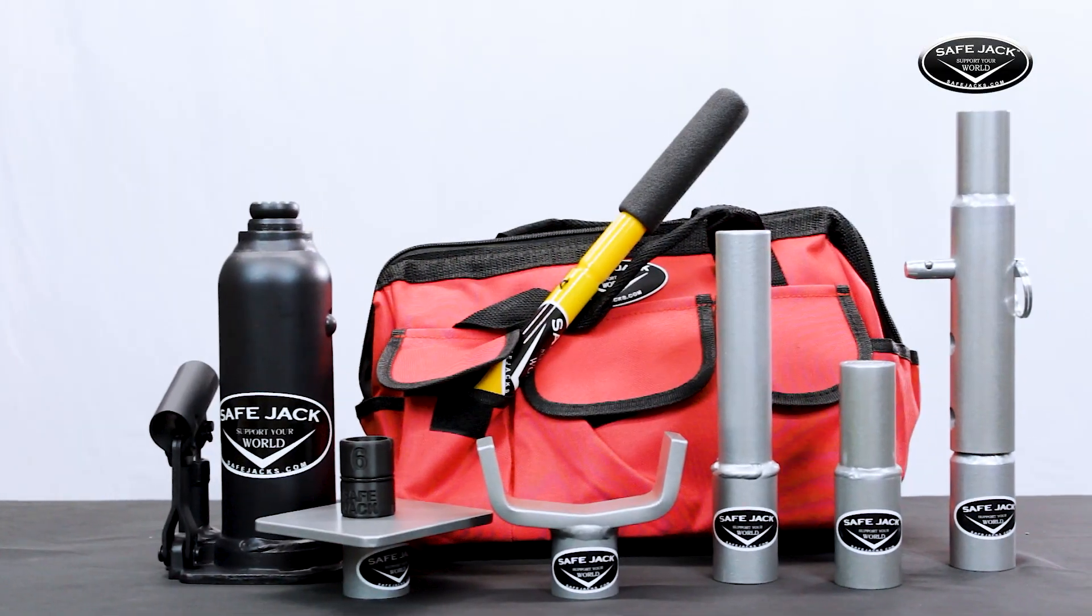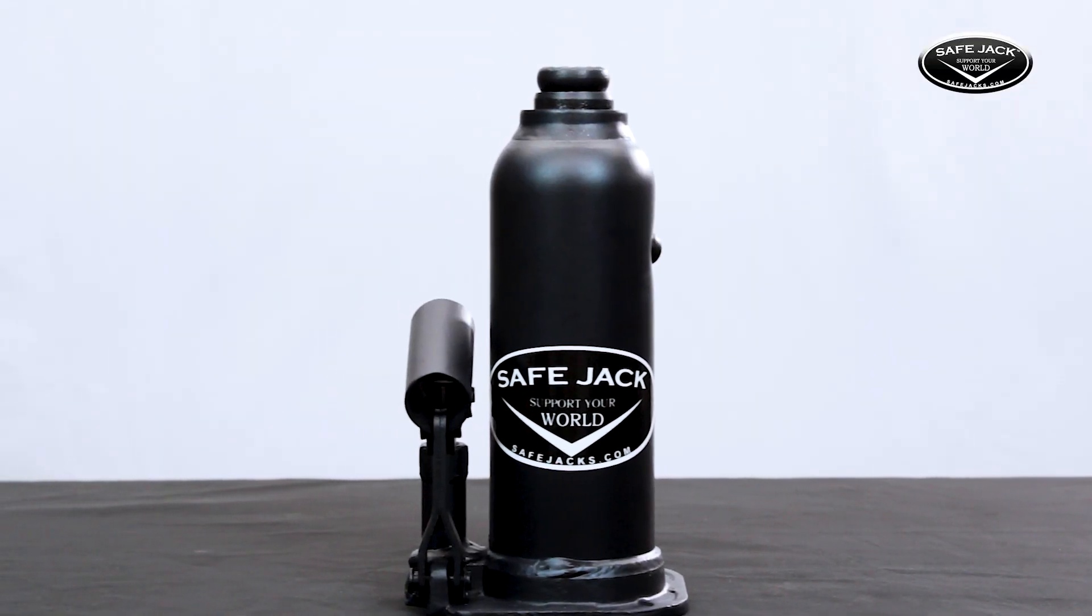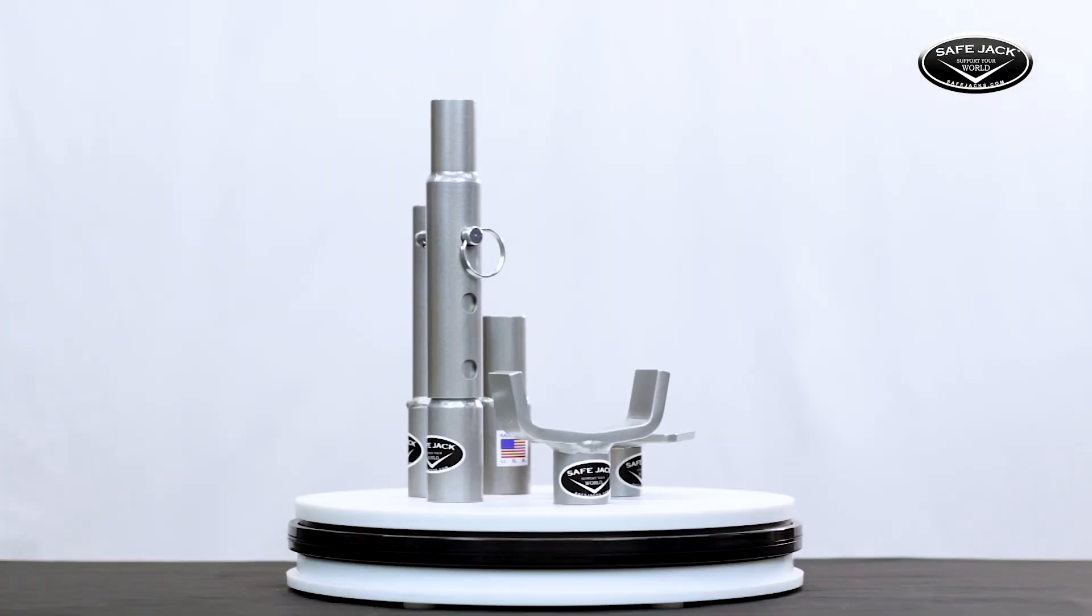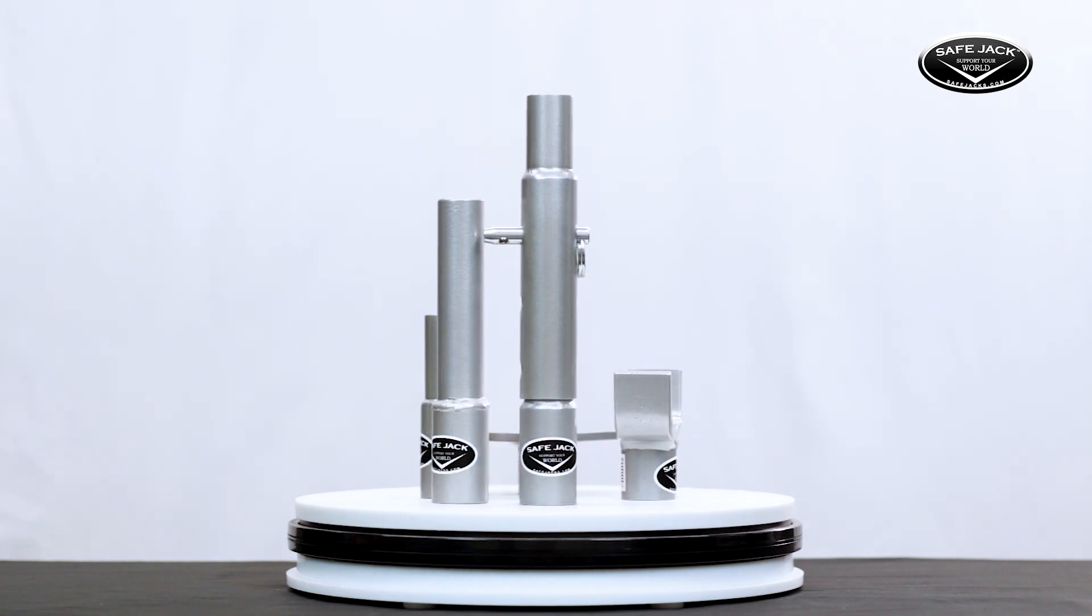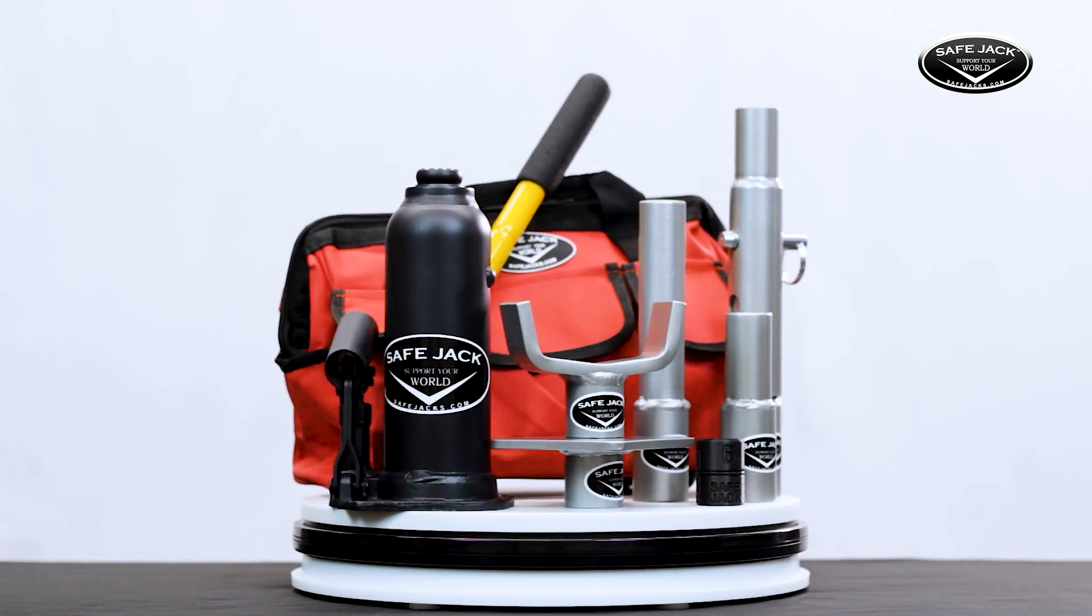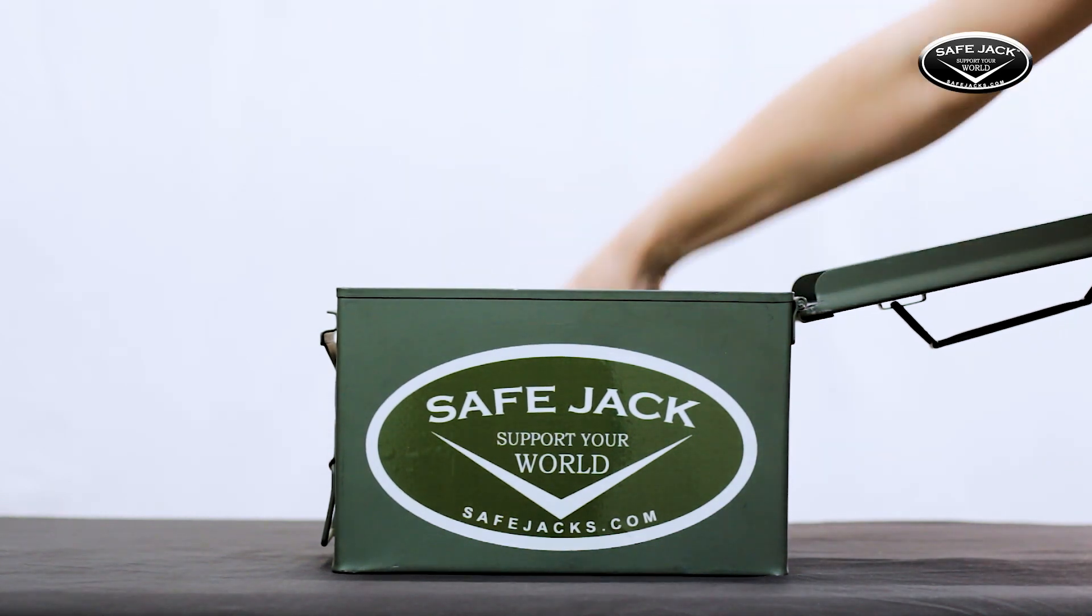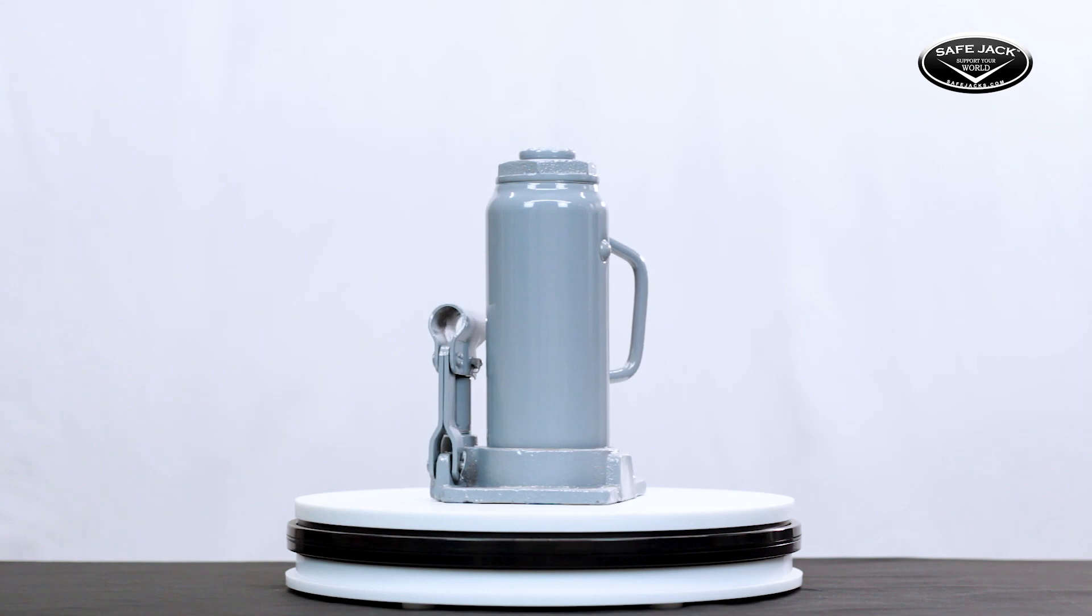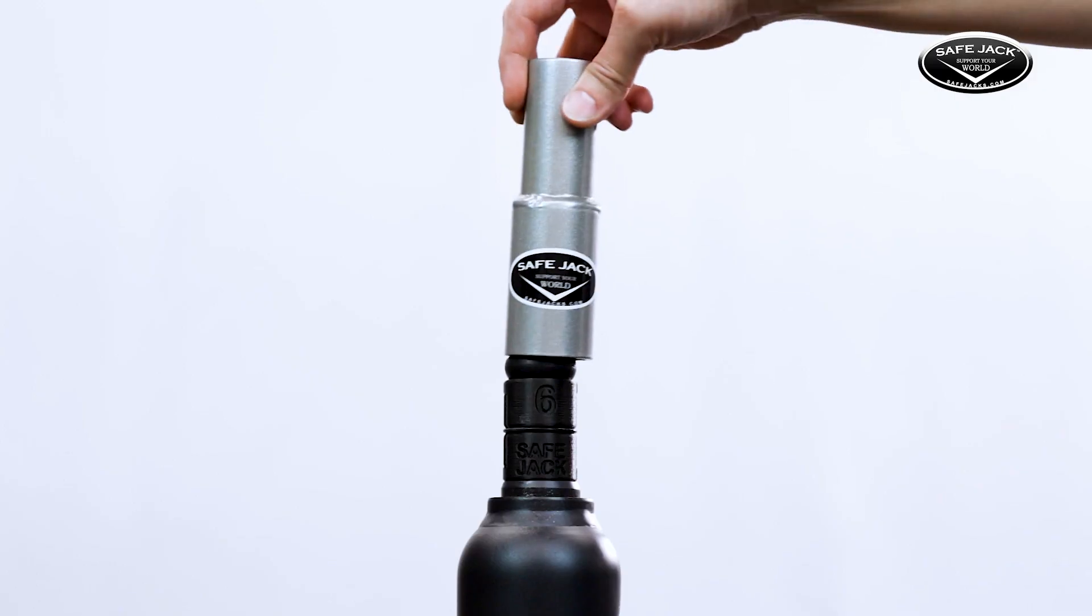A misconception about SafeJack is that we manufacture the jacks then design our extensions and lift pads around them. But this isn't actually necessary. While we do have a fantastic selection of conveniently pre-packaged kits including all the necessary tools, still nearly any bottle jack you already own can be seamlessly integrated with our extensions and lift pads.